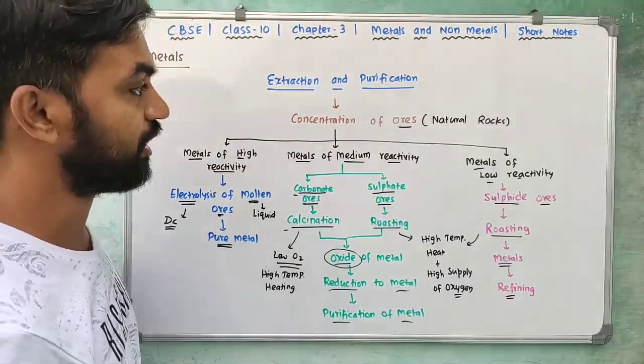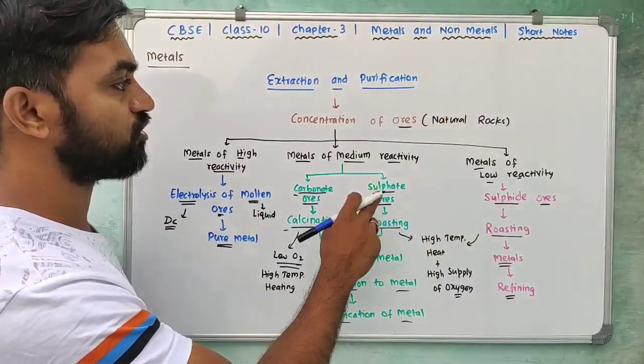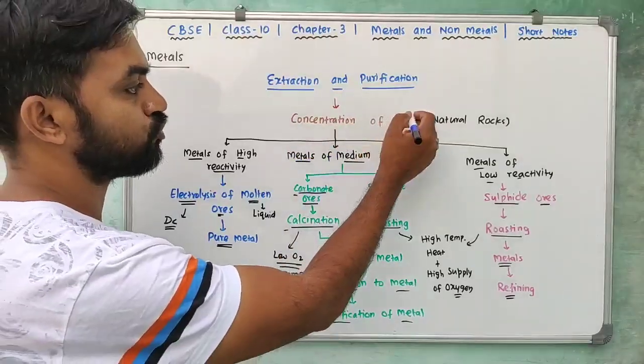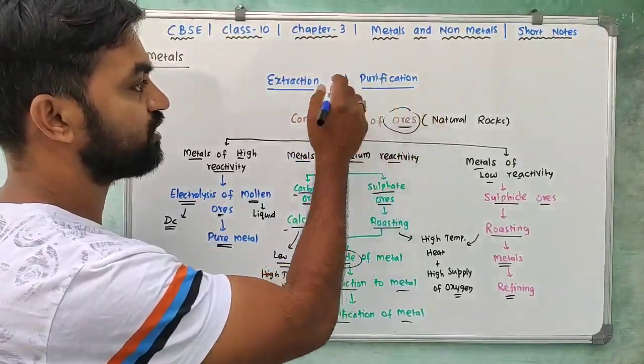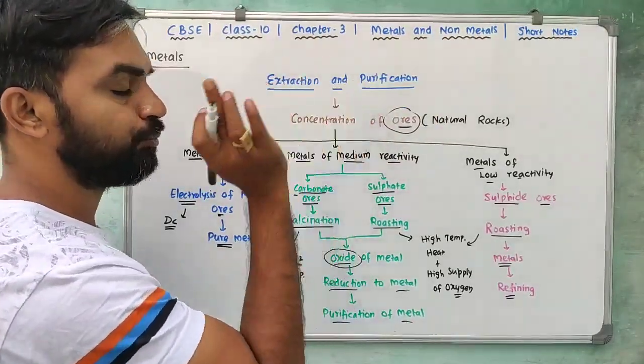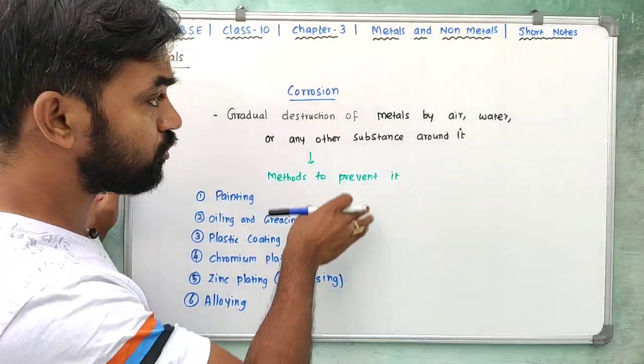So the overall process is: natural rocks → concentration of ores → extraction → purification. Now let's discuss corrosion.